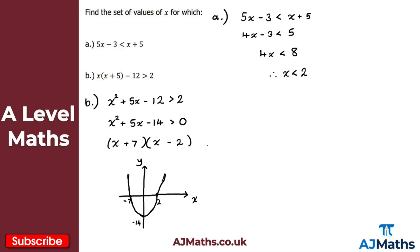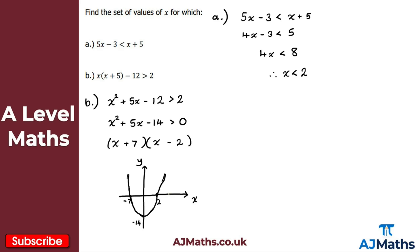We're looking for where this is greater than zero, meaning where the curve is above the x-axis. There are two regions: everything to the right of 2 (x > 2) and everything to the left of -7 (x < -7). So the solution is x > 2 or x < -7. Note: the inequality symbol matches the original — if it were ≥, we'd use ≥ in the solution too.